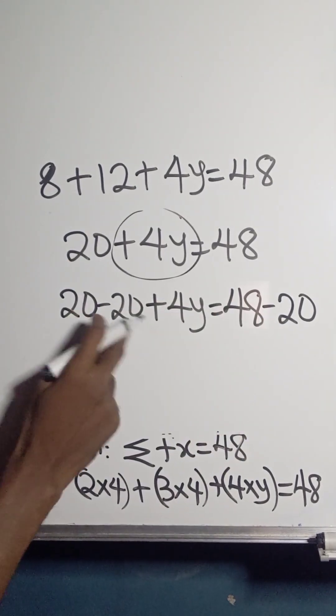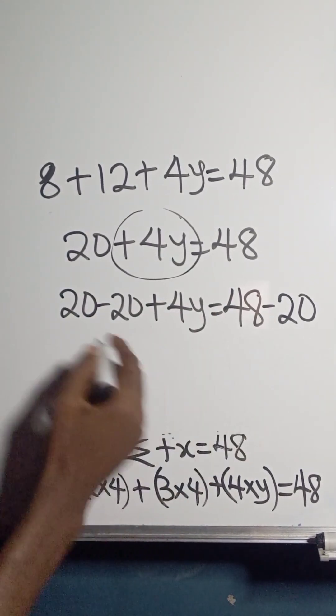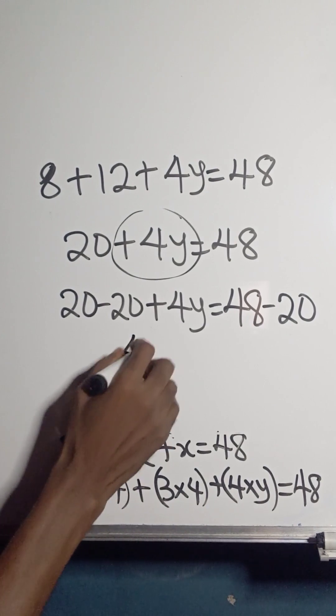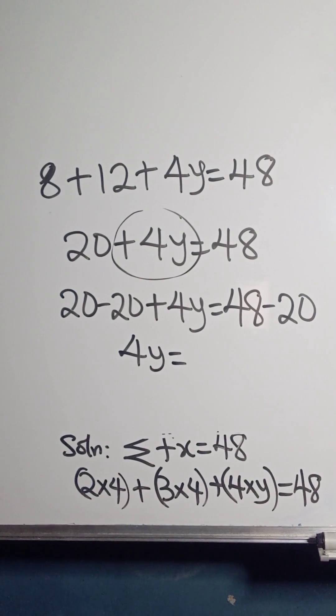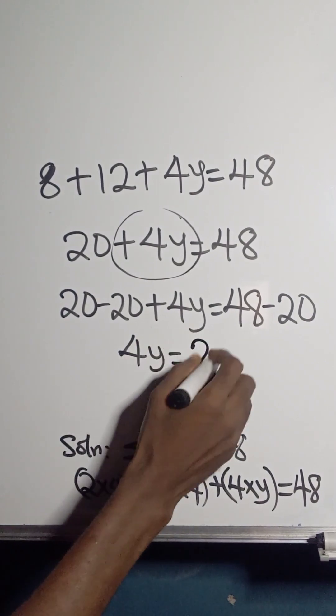48 minus 20 gives us 28, so 4y equals 28.